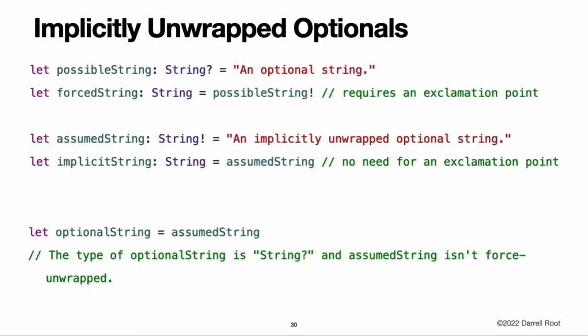The following example shows the difference in behavior between an optional String and an implicitly unwrapped optional String when accessing the wrapped value as an explicit String. You can think of an implicitly unwrapped optional as giving permission for the optional to be force unwrapped if needed. When you use an implicitly unwrapped optional value, Swift first tries to use it as an ordinary optional value. If it cannot be used as an optional, Swift force unwraps the value. In the code, the optional value assumedString is force unwrapped before assigning its value to implicitString, because implicitString has an explicit non-optional type of String.